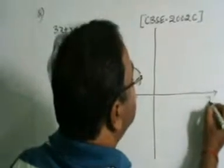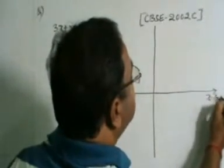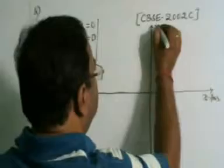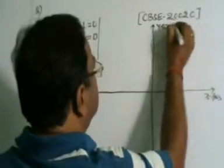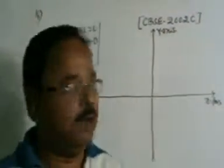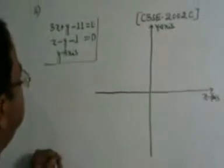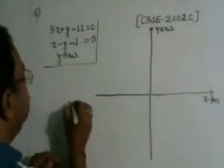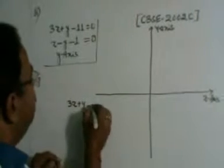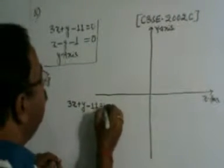Now, this is x-axis and this is y-axis. After that, 3x plus y minus 11, 3x plus y minus 11 is equal to 0.